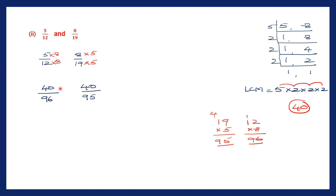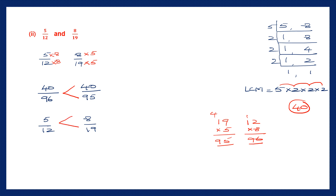Now our numerators are the same — 40 and 40. Our denominators are 96 and 95. When numerators are the same, the greater denominator makes the smaller fraction. So 40 by 95 is greater than 40 by 96. Going back to the question: 5 by 12 and 8 by 19 — 8 by 19 is greater than 5 by 12.